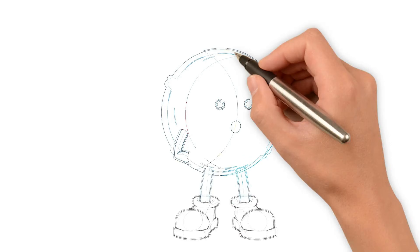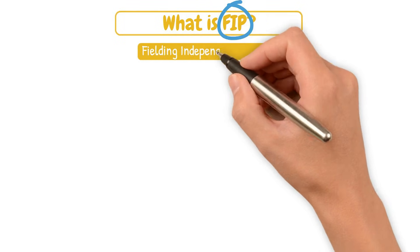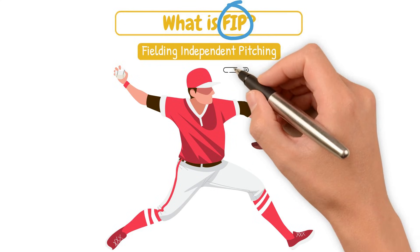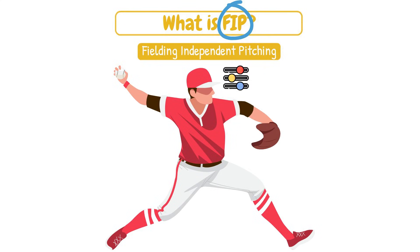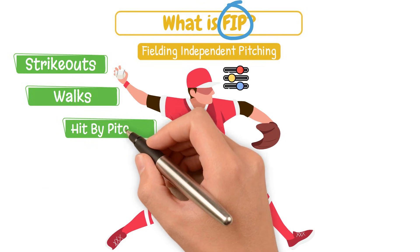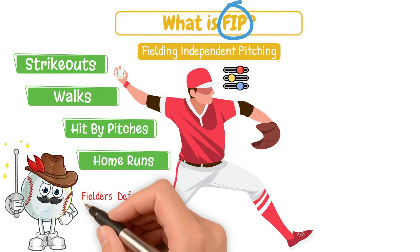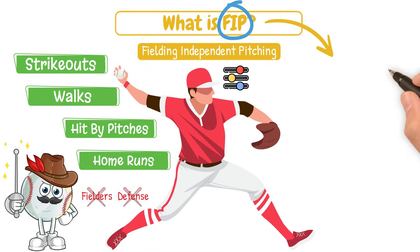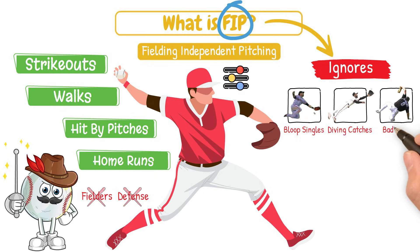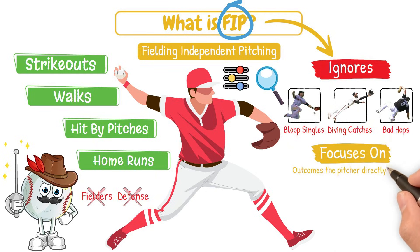Let's begin with a quick refresher on what FIP is. FIP stands for Fielding Independent Pitching, and it tells us how well a pitcher performs based on things only they can control: strikeouts, walks, hit-by-pitches, and home runs. The logic is to take fielders and defense completely out of the equation. FIP ignores bloop singles, diving catches, and bad hops, and just focuses on the outcomes that a pitcher directly controls.